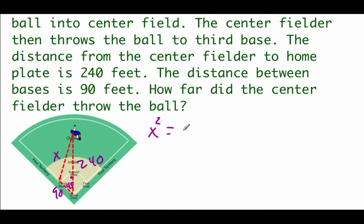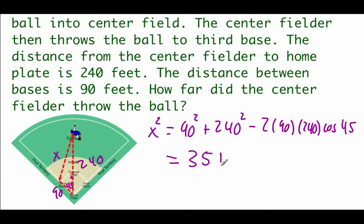So we're going to go x squared equals 90 squared plus 240 squared minus 2 times 90 times our 240 times the cosine of that 45 degree angle. When we type that right-hand side into our calculator, we should get 35,152.99, and then square rooting that to get our final answer, it ends up being about 187.5 feet.